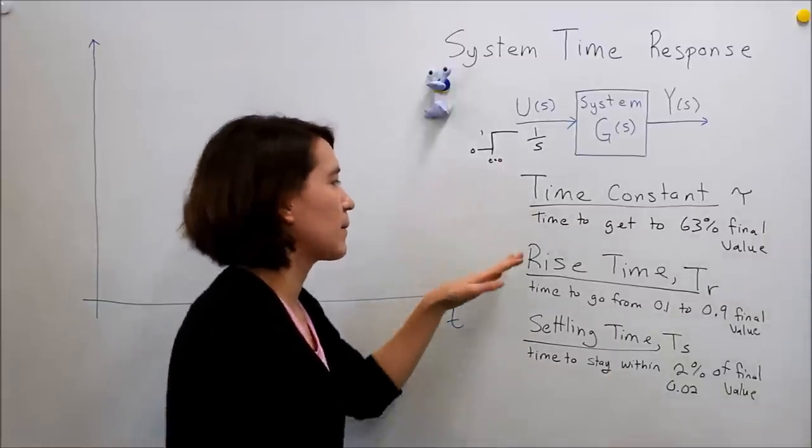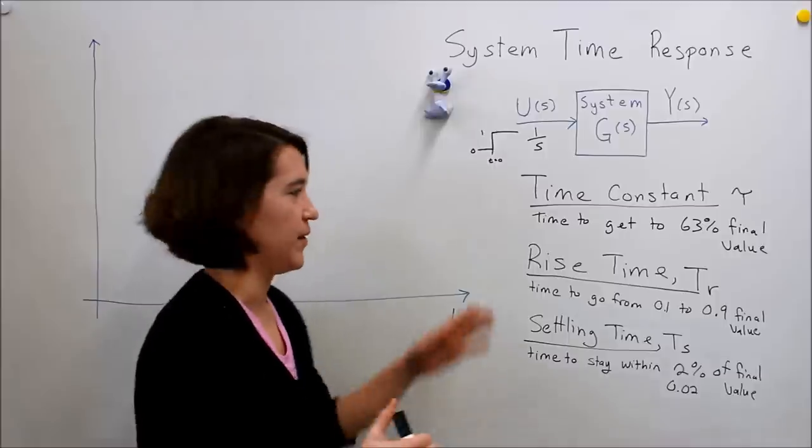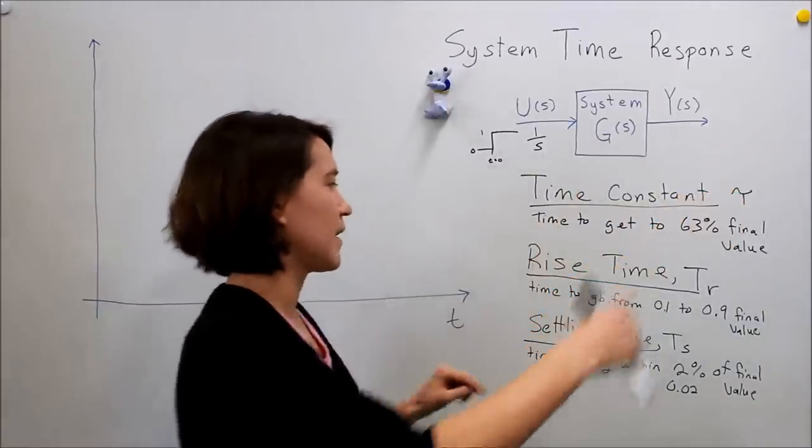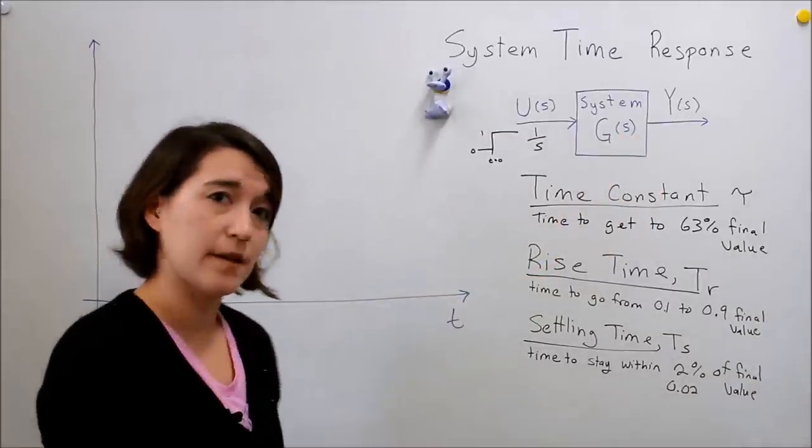So these are just terms that are important. If someone says what's the rise time, you need to know what that means. How quickly it goes from 10% to 90%, and then settling time is within 2% of the final value.